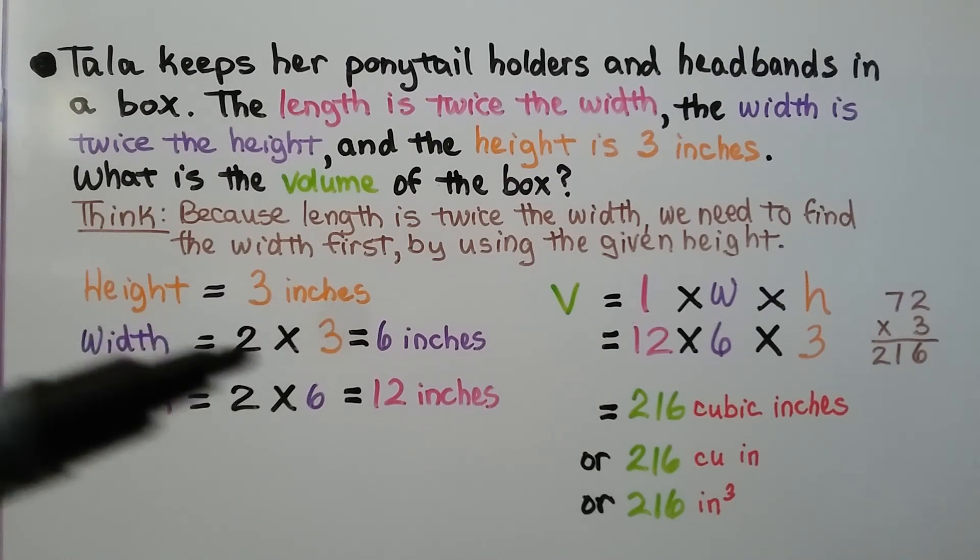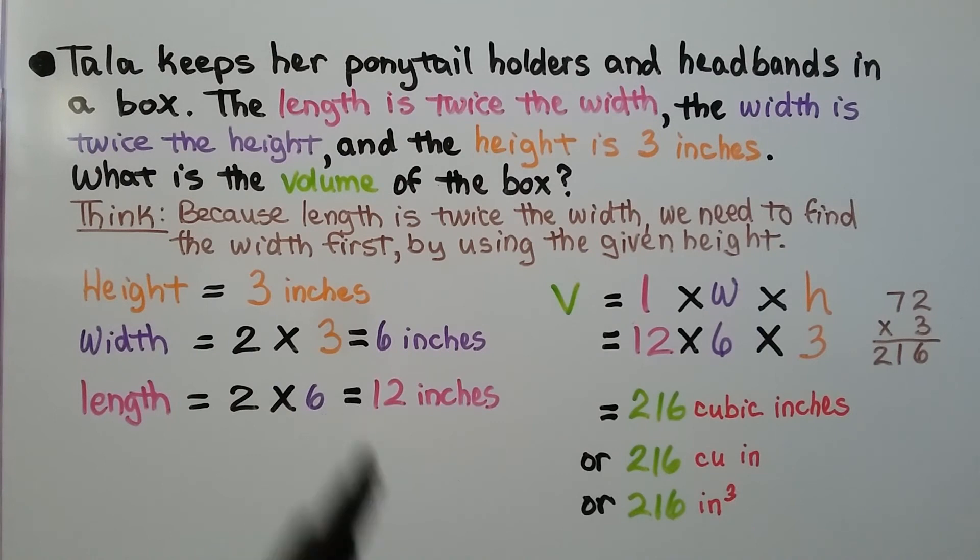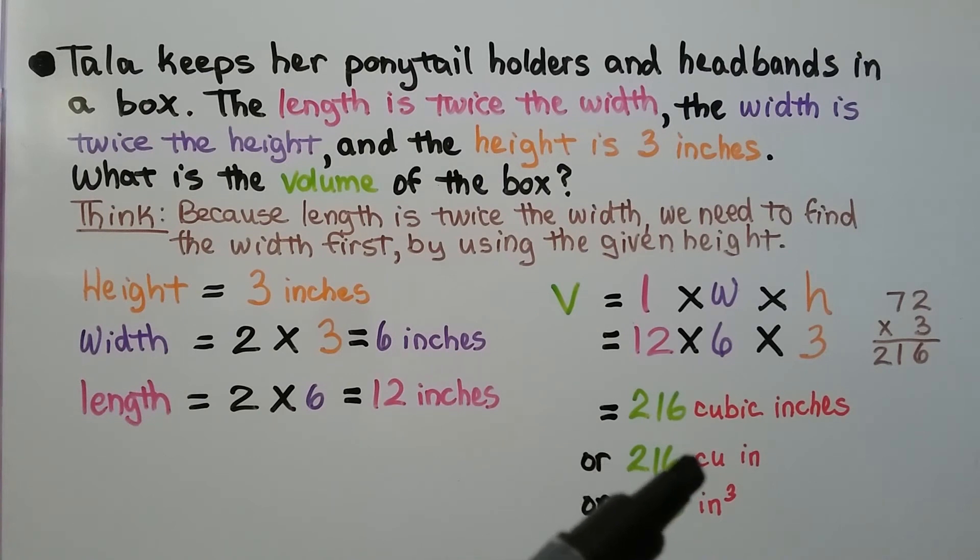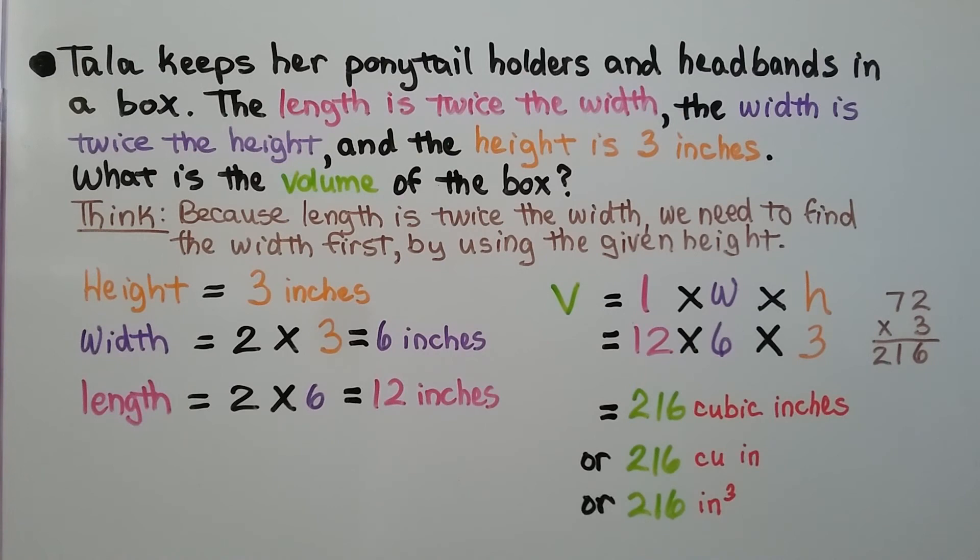It's in inches. It's in inches, because the height says 3 inches. So these are inches. So we know that it's 216 cubic inches. And we can write it as cu in for the abbreviation. Or we can write it as in with a little 3 exponent showing we had 3 dimensions. Inches cubed.